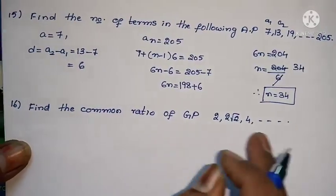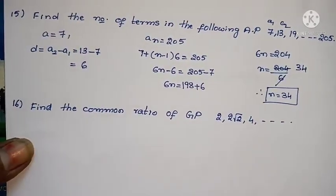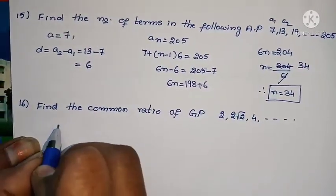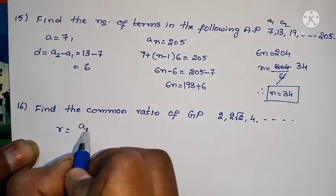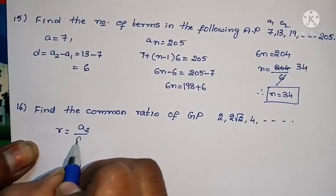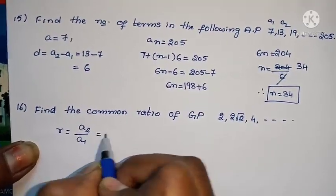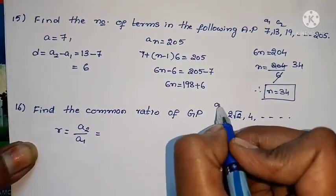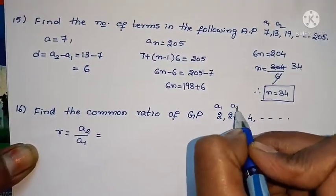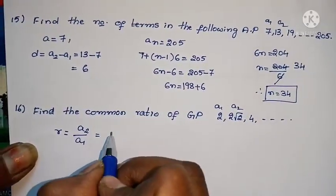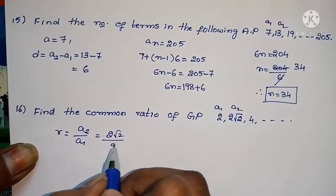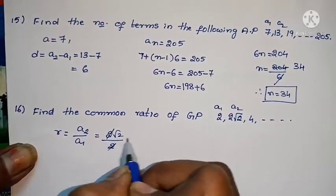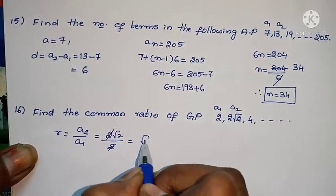Next: Find the common ratio of a GP. Common ratio R equals A2 by A1. A2 is 2√2, A1 is 2. Cancelling 2, R equals √2.